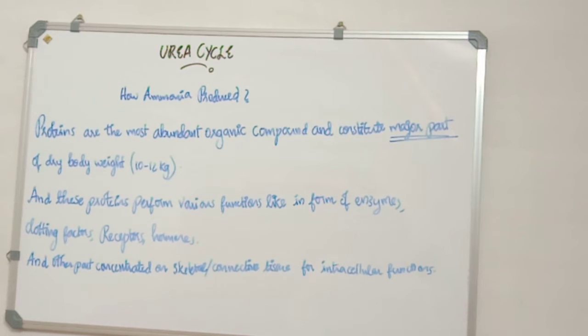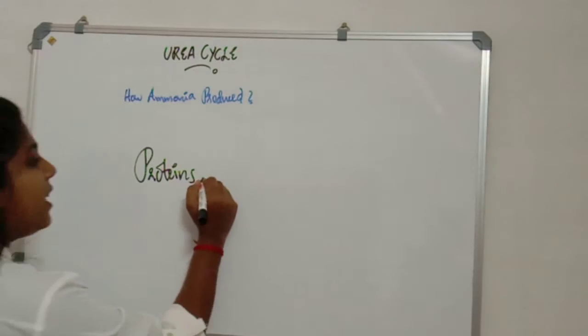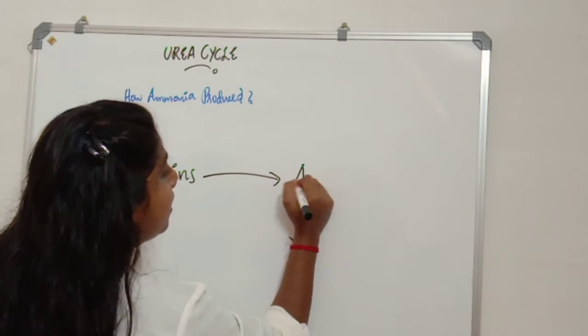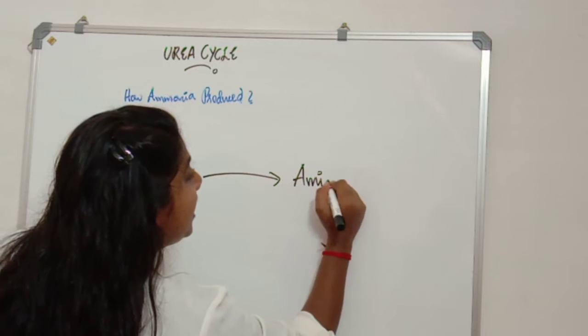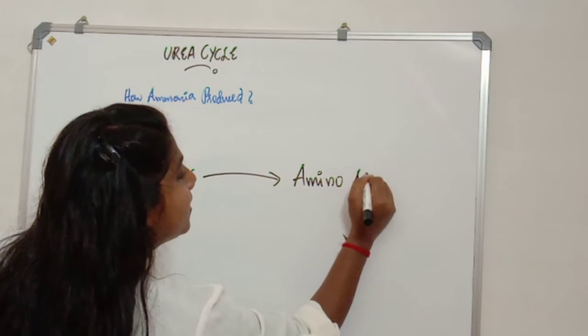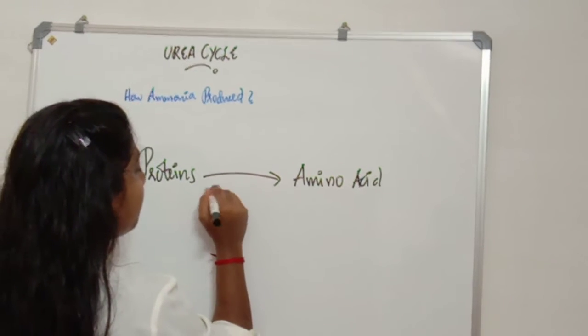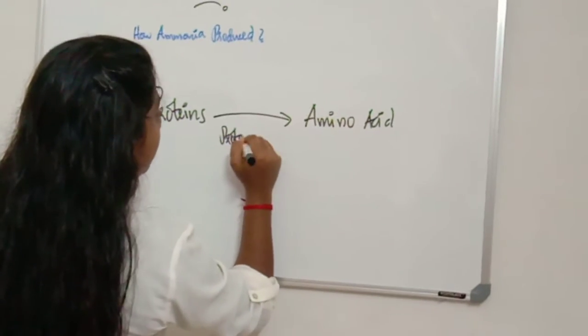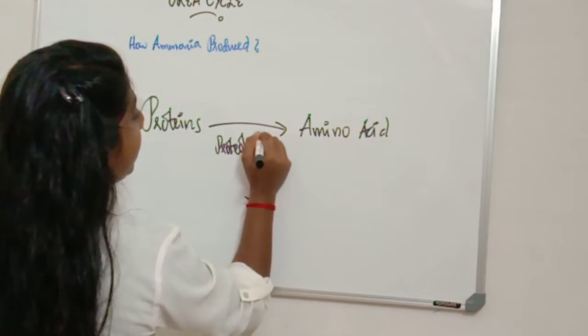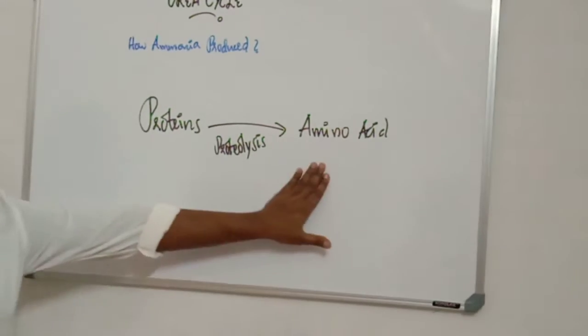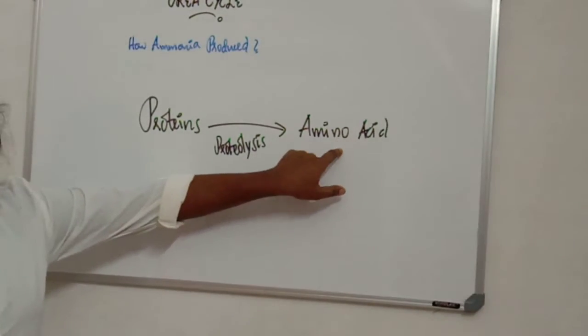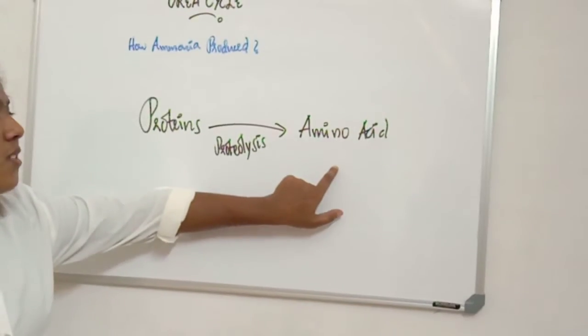And the other part is concentrated on skeletal or connective tissue for intracellular function. These proteins lyse to form amino acids, individual amino acids. The protein undergo proteolysis to form amino acids.